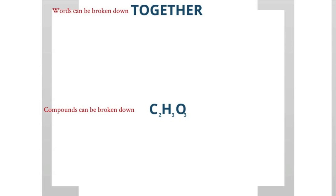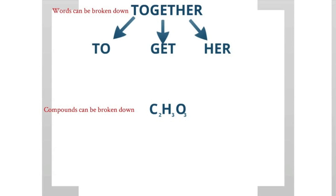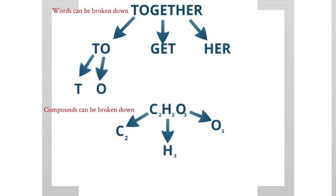'Together' breaks down into 't-o-g-e-t-h-e-r.' And this chemical compound breaks down to C2H3O3. The number 2 can break down even further, so we break the words down into their letters. And after the letters, you can't break down any more.